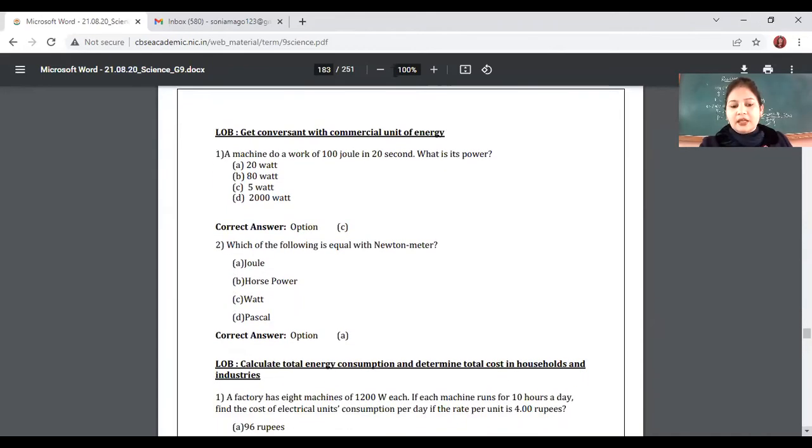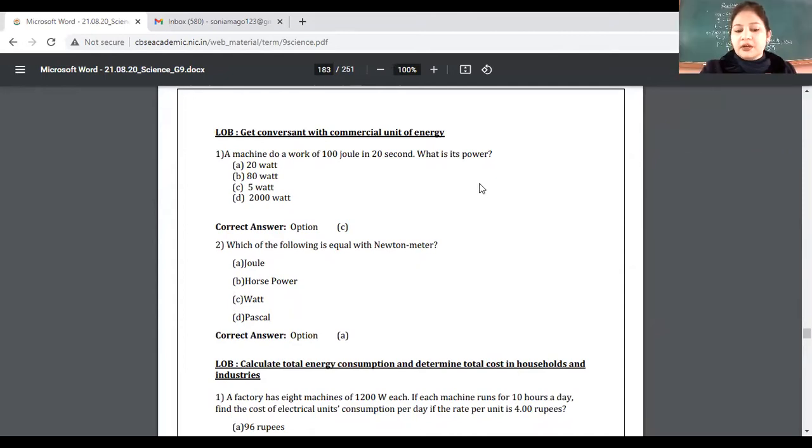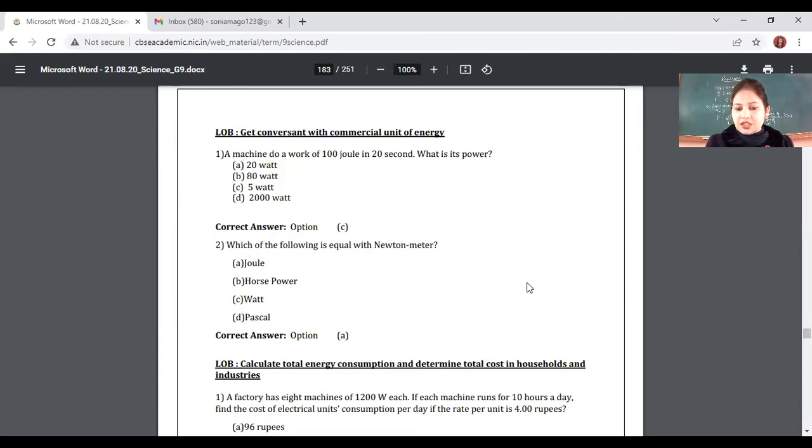A factory has 8 machines of 1200 watt each. If each machine runs for 10 hours a day, find the cost of electrical units consumption per day if the rate per unit is 4 rupees. Chaliye, kar sakte hain calculate, wahi jaise hain bill calculate karte hain, same way. You have to do it. A factory has 8 machines of 1200 watt each. Each machine runs for 10 hours a day. What is the cost per day?